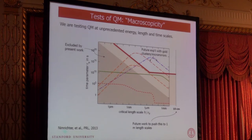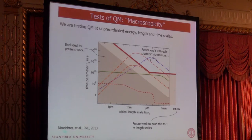We've been trained to believe that non-relativistic quantum mechanics is correct, but we all know there are things that don't make sense about that theory — it doesn't pass basic sniff tests. I think it's important to push frontiers in this way, and maybe we'll find that at some distance scale, time scale, or energy scale, quantum mechanics doesn't obey the Schrödinger equation like we think it should.